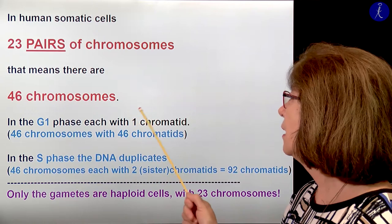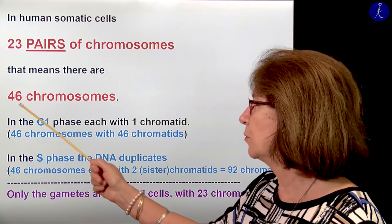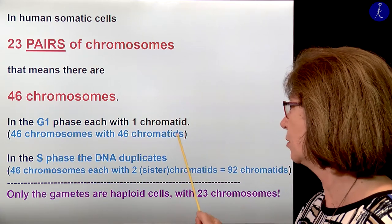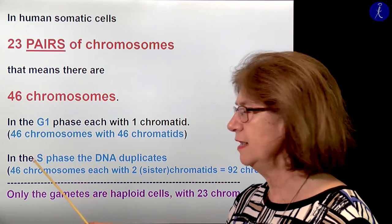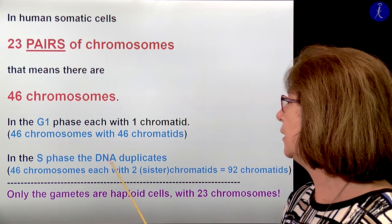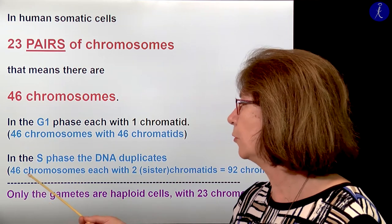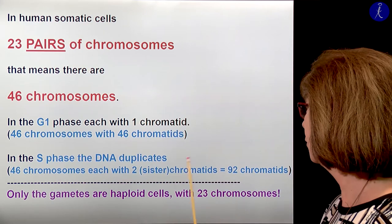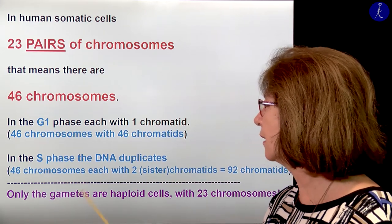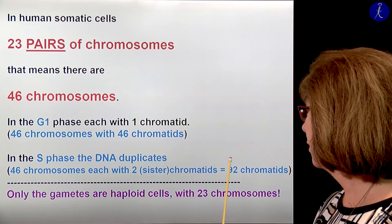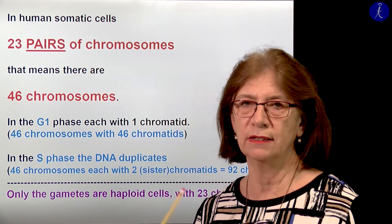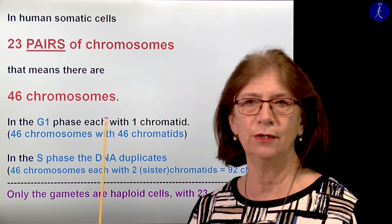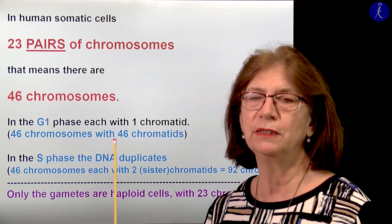In the G1 phase, each of these 46 chromosomes has one chromatid, so those cells have 46 chromosomes with 46 chromatids. In the S phase — the synthetic phase — the DNA duplicates. That means we will still have 46 chromosomes, each with two sister chromatids, making 92 chromatids. Only the gametes are haploid cells with 23 chromosomes. There are no other normal somatic cells which contain 23 chromosomes. Try to remember and understand this because we see a lot of problems with this in the exam.